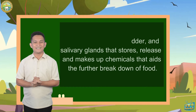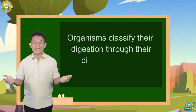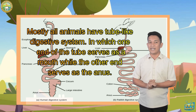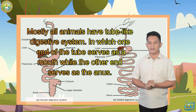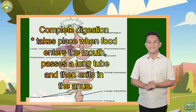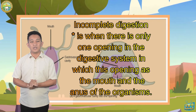Organisms classify their digestion through their digestive system. Most animals have a tube-like digestive system in which one end serves as the mouth while the other end serves as the anus. Complete digestion takes place when food enters the mouth, passes through a long tube, and exits through the anus. Incomplete digestion is when there is only one opening in the digestive system serving as both the mouth and the anus.